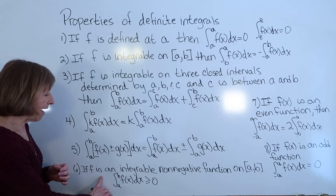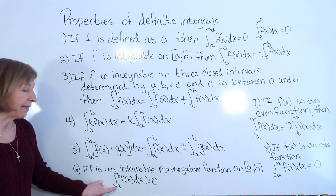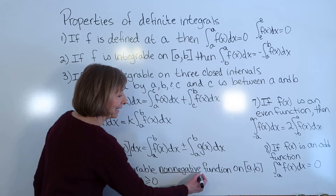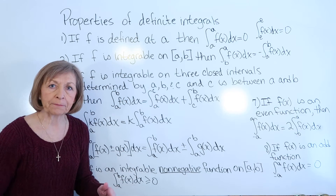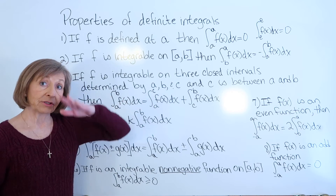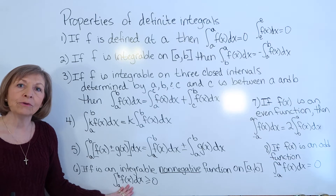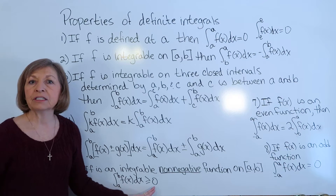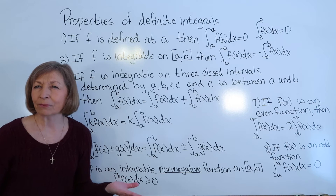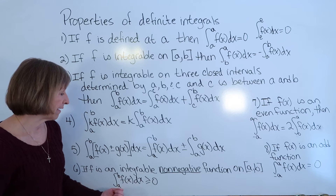Property 6: if f is an integrable, non-negative function on a closed interval — meaning its graph never goes below the x-axis over the interval — then the definite integral from a to b of f of x dx is greater than or equal to zero. This is a good way to double-check that you're getting the correct sign for your definite integral value.